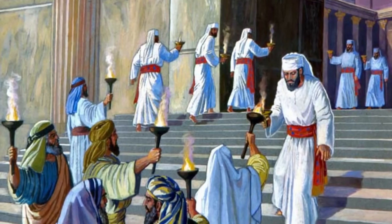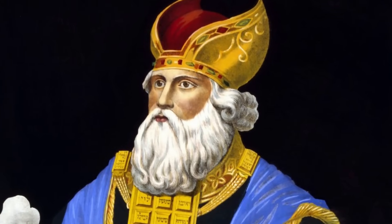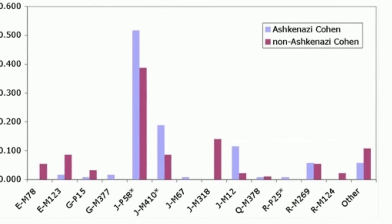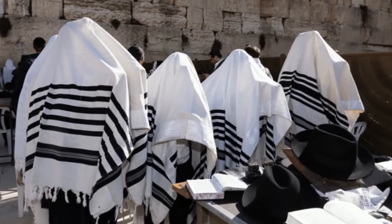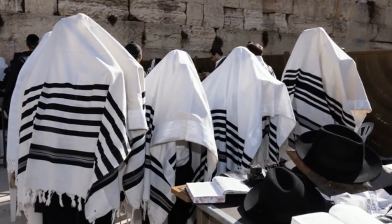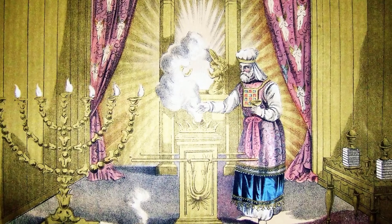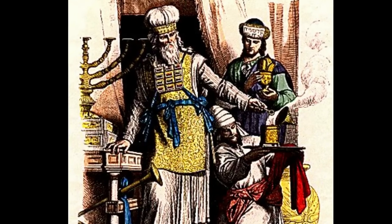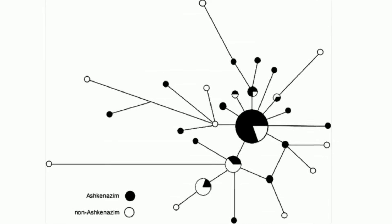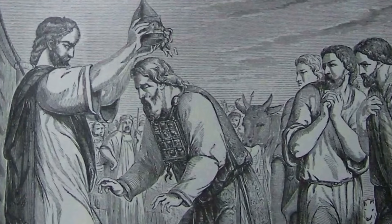Among the most remarkable findings in Jewish population genetics is the genetic distinctiveness of the Kohanim, the Jewish priestly caste whose patrilineal descent is traditionally traced to Aaron, the brother of Moses. Y-chromosomal analysis of men claiming Kohanim status reveals a distinctive genetic signature known as the Kohen modal haplotype, a specific pattern of Y-chromosomal short-tandem repeat markers within haplogroup J1-P58. The Kohen modal haplotype is found at elevated frequencies among Kohanim from diverse Jewish populations including Ashkenazi, Sephardic, and Mizrahi communities, suggesting that the patrilineal genetic signature of the ancient priesthood has been maintained across all major branches of the diaspora. Molecular dating analysis suggests that the common ancestor of modern Kohanim lived approximately 3,000 years ago, consistent with the biblical chronology for the establishment of the Israelite priesthood.